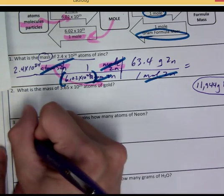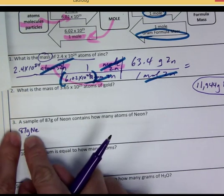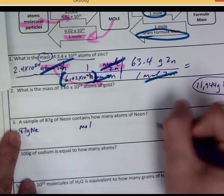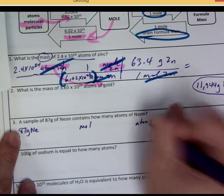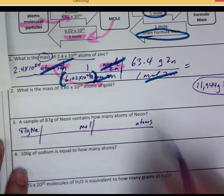Number three here. We have 87 grams of Neon. 87 grams of Neon. We need to go to atoms. One more grams, we can go to moles. We have to go to moles next. And then we go to atoms. Leave yourself some space between so that you can draw your grid.